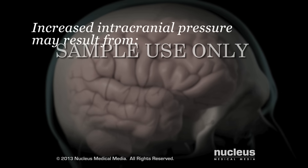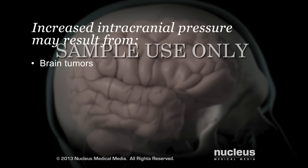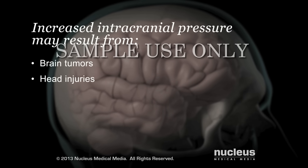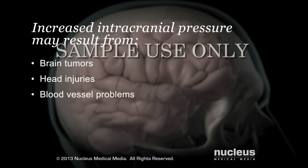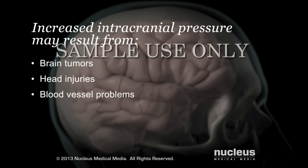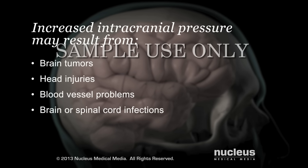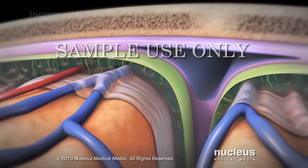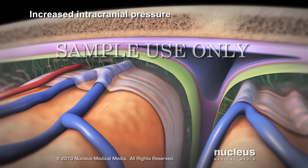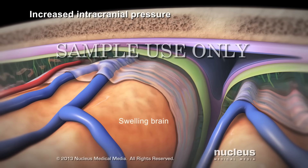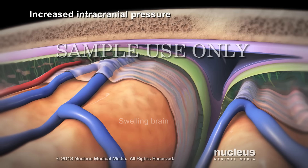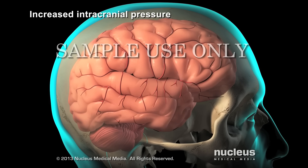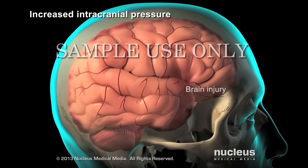Increased intracranial pressure may result from brain tumors, head injuries, problems with your blood vessels, or infections in your brain or spinal cord. These conditions put pressure on your brain and may cause it to swell or change shape inside your skull, which can lead to serious brain injury.